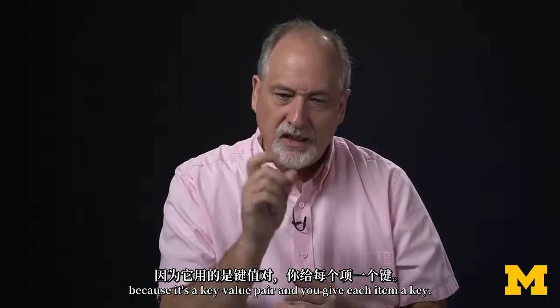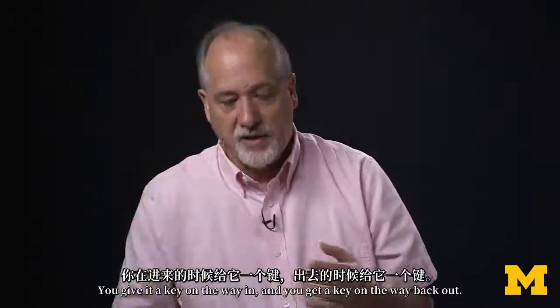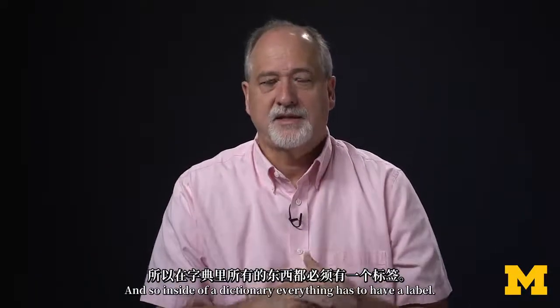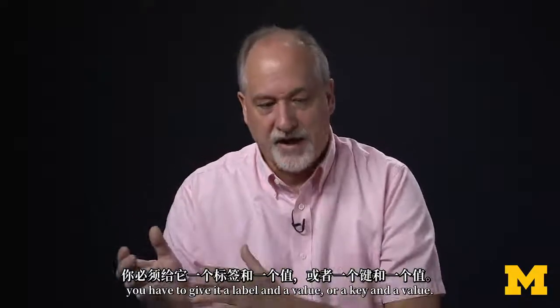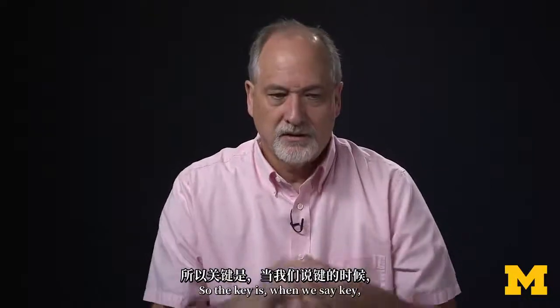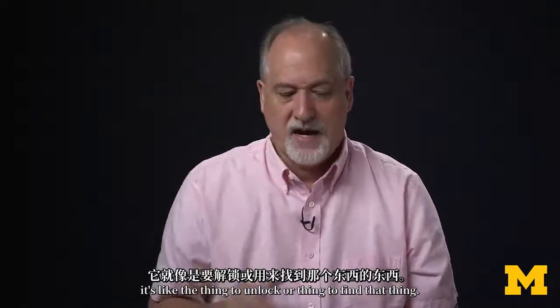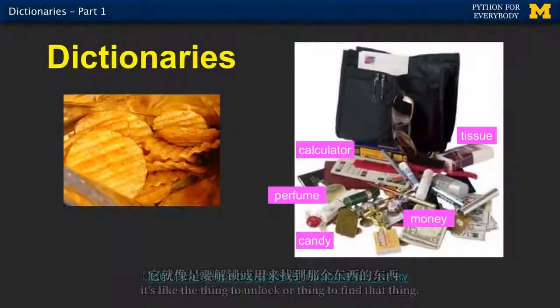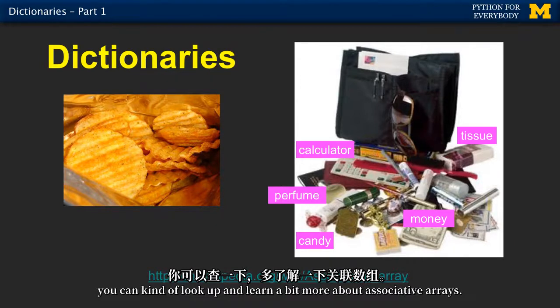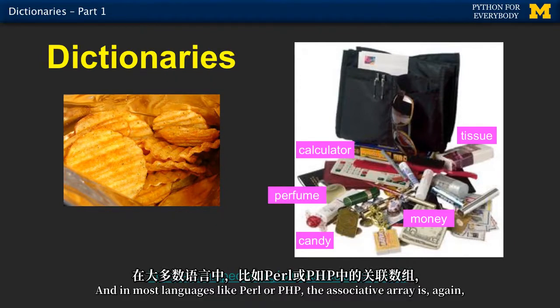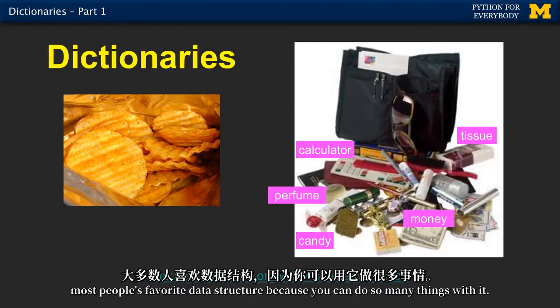And so inside of a dictionary, everything has to have a label. You can't just put something in a dictionary. You have to give it a label and a value, or a key and a value. So the key is, when we say key, it's like the thing to unlock or thing to find that thing. It's a general concept in many languages called associative array. You can look up and learn a bit more about associative arrays. And in most languages, like Perl or PHP, the associative array is most people's favorite data structure because you can do so many things with it.